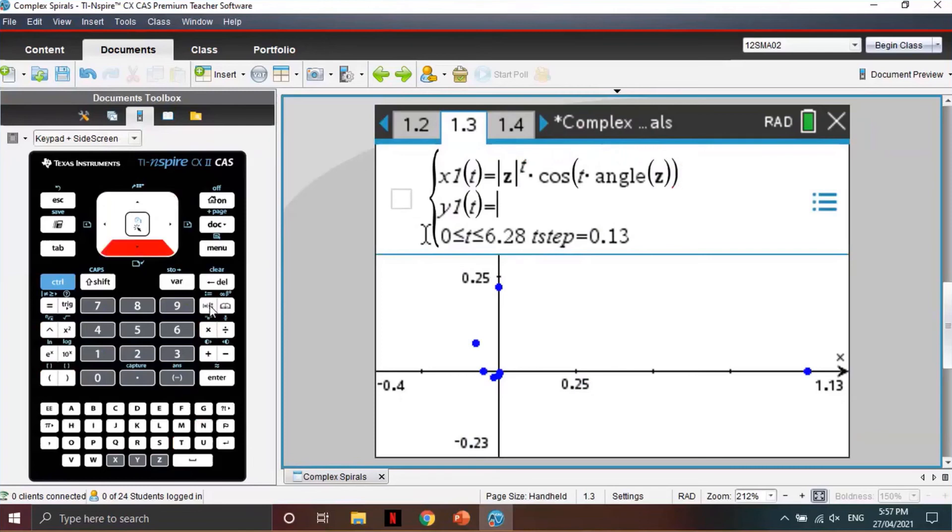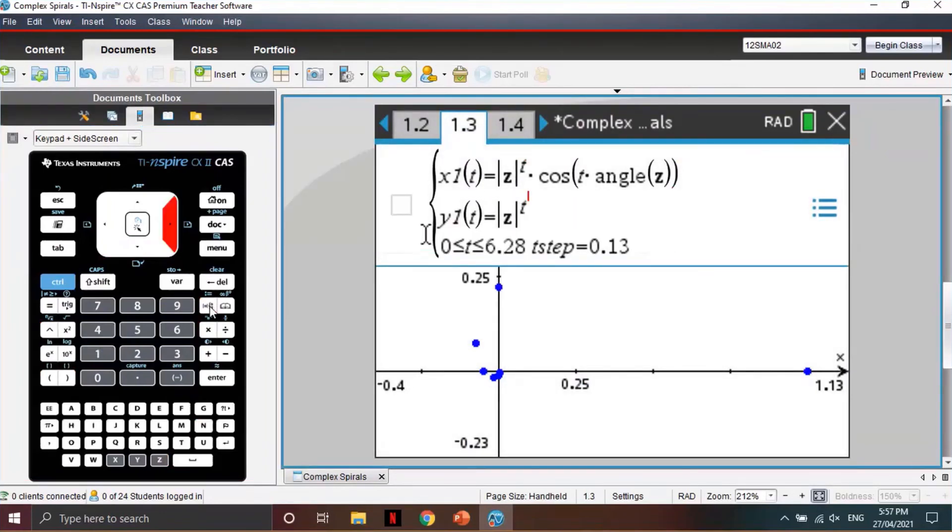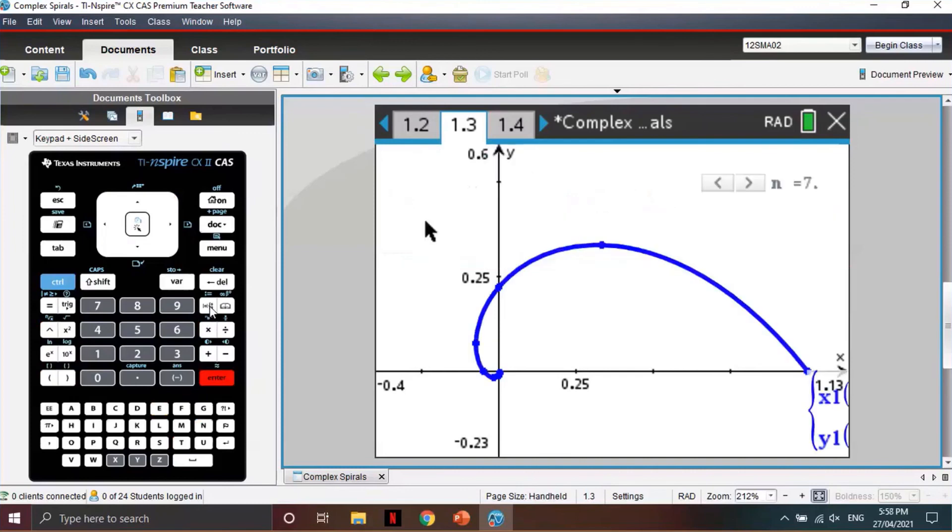And similarly, for the Y values, same thing, except this time we're going to multiply by sine. And press Enter, and there is our spiral.